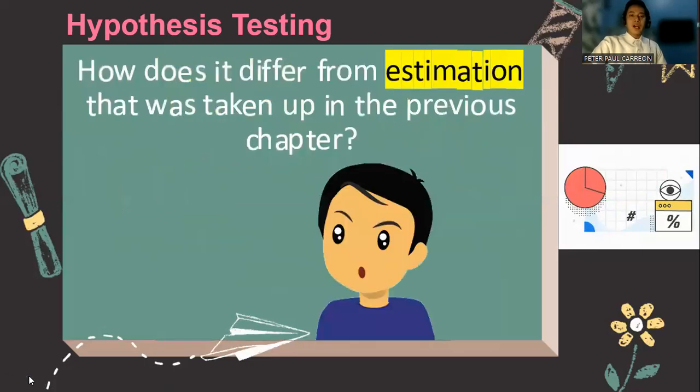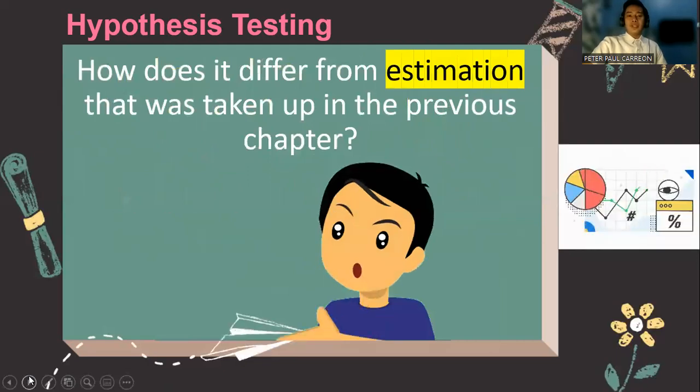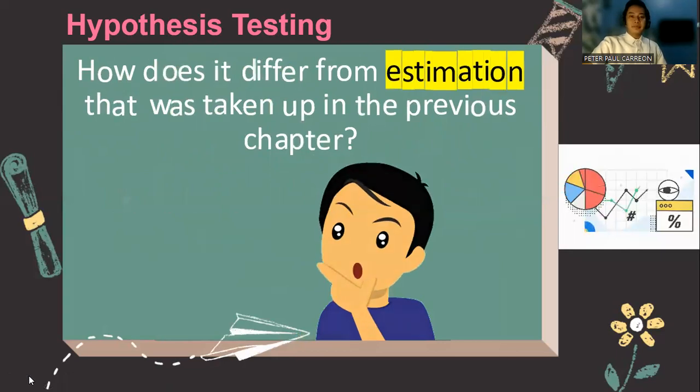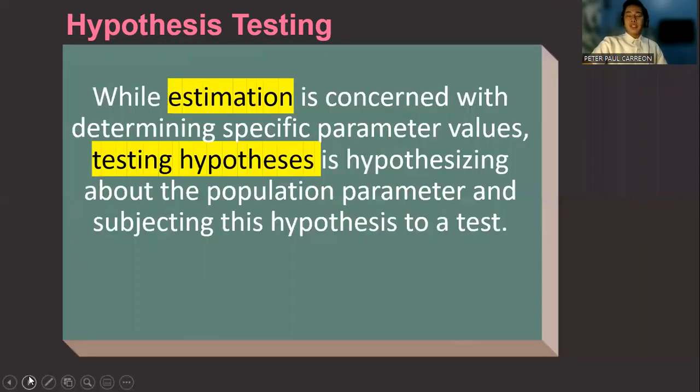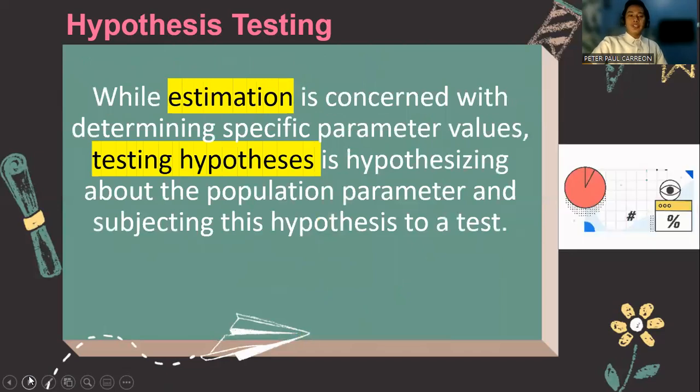So how does it differ from estimation that was taken up in the previous chapter? While estimation is concerned with determining specific parameter values, it just focuses on the upper boundaries and the lower boundaries.